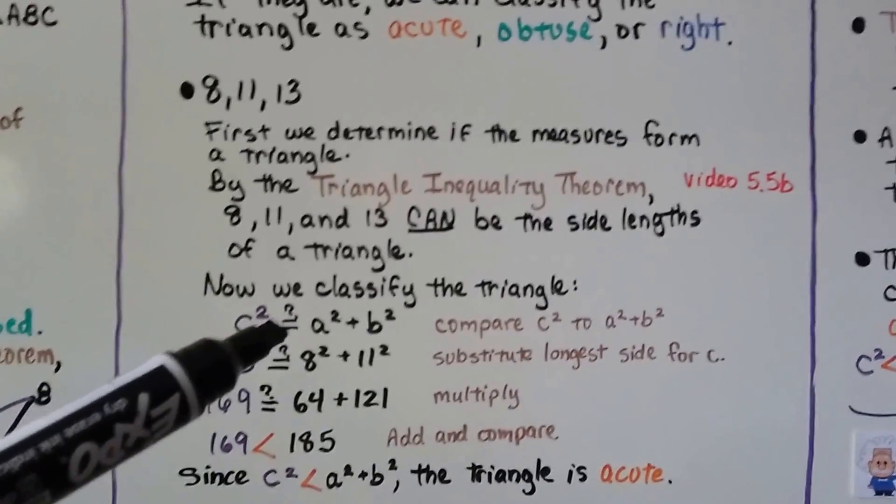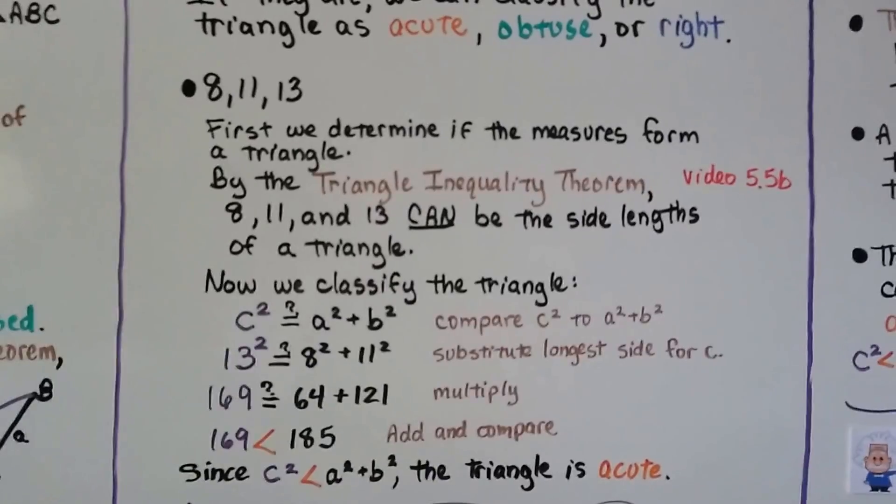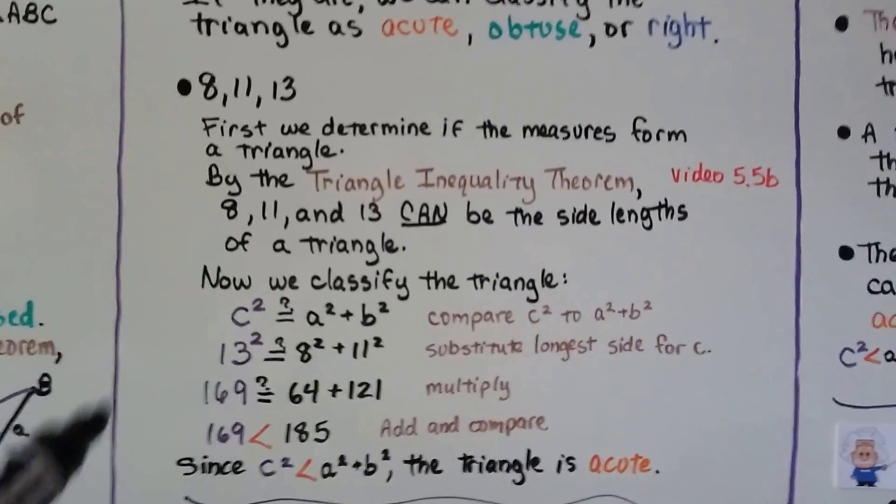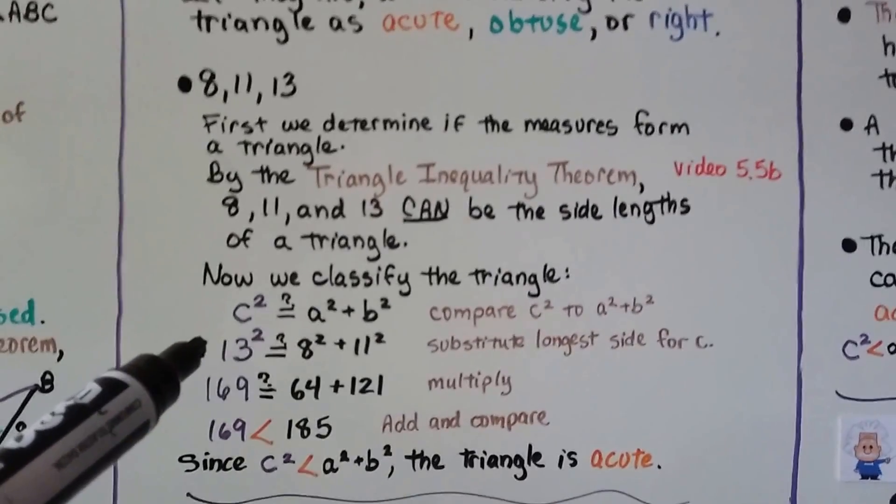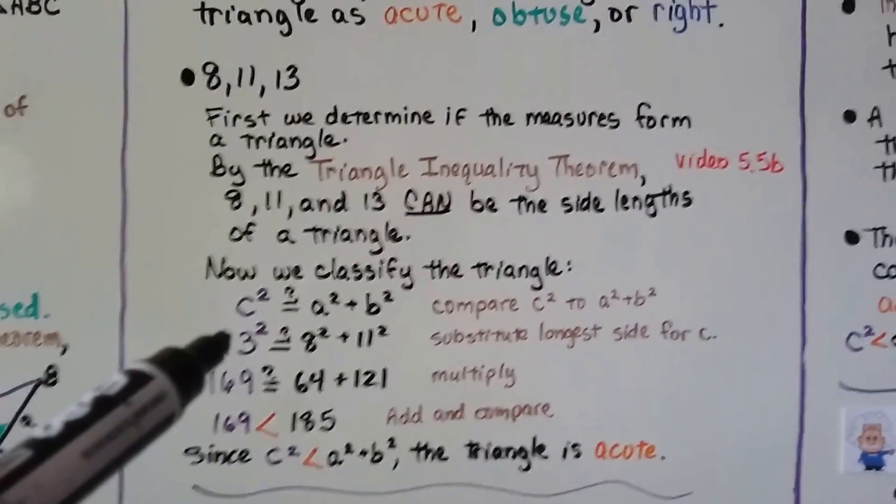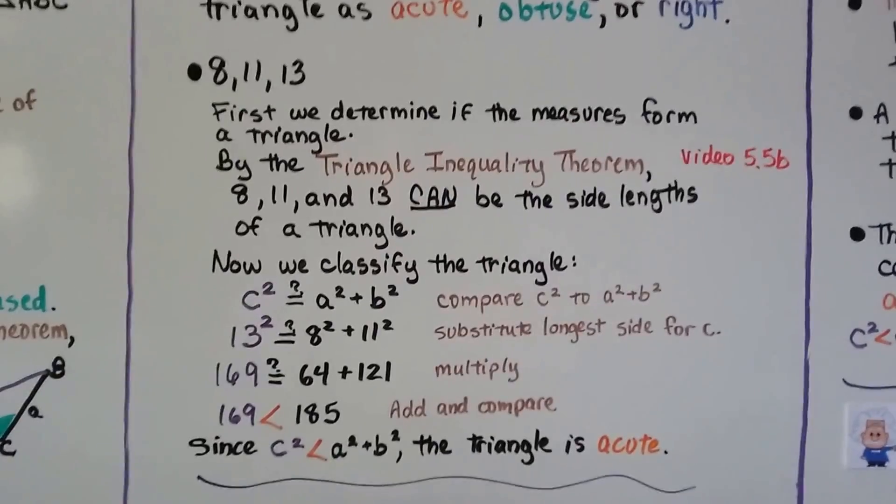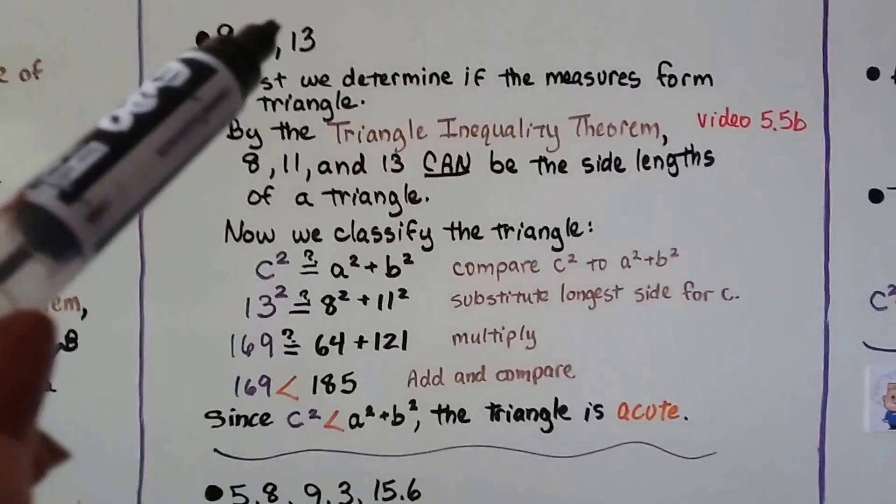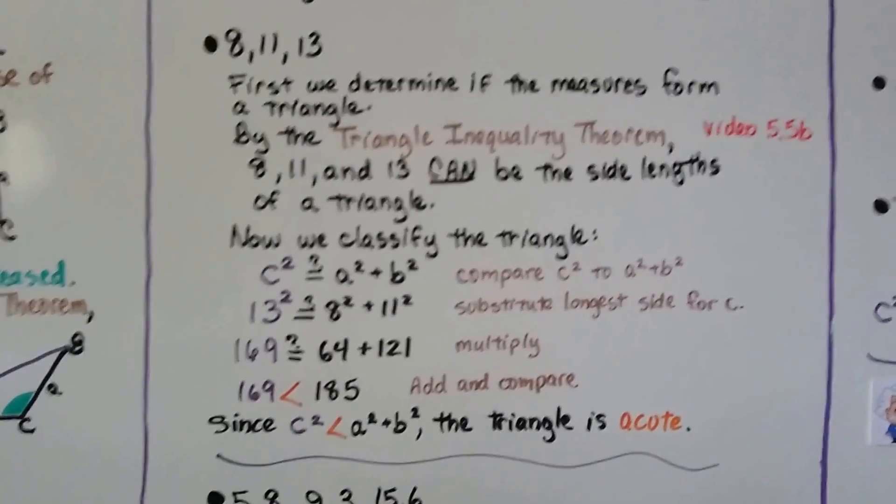We compare c² to a² + b². We substitute the longest side for c. So that would be 13, the biggest number. Is 13² equal to 8² + 11²? Substituting in those numbers.